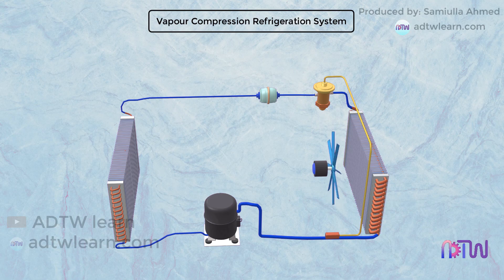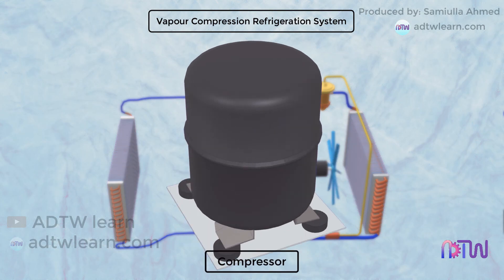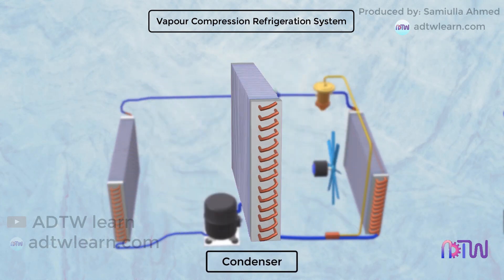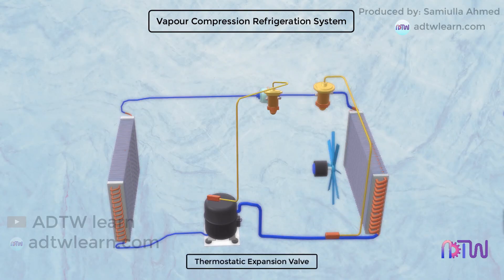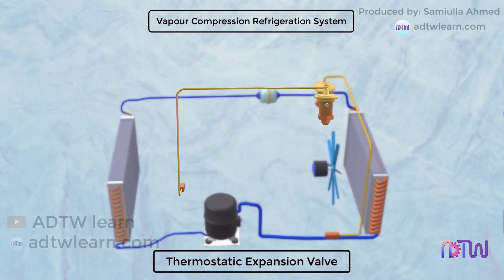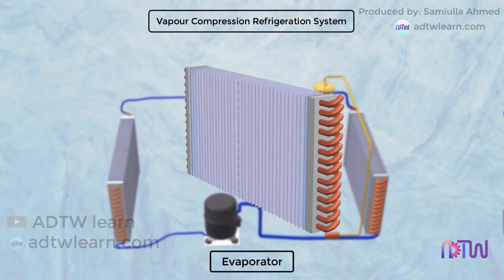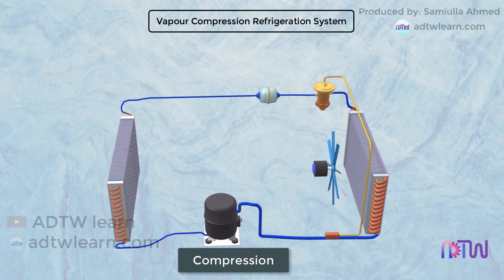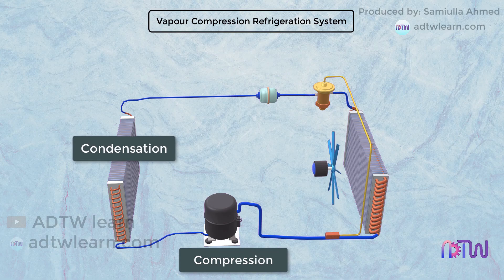The essential components of the vapor compression refrigeration system are: compressor, condenser, throttling device, and evaporator. There are four steps involved in this process: compression, condensation, throttling, and evaporation.